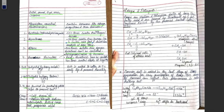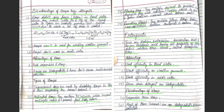Soaps are sodium or potassium salts of long-chain fatty acids, prepared by saponification — the alkaline hydrolysis of fats producing soap and the by-product glycerol. Now, disadvantages of soaps over detergents: soaps do not work in hard water, forming an insoluble gummy precipitate called scum, because hard water contains calcium and magnesium salts that react with soap.